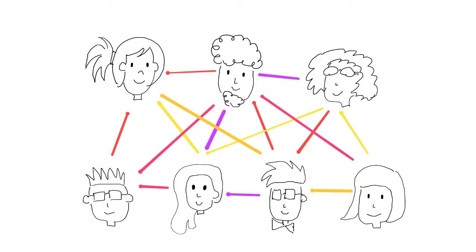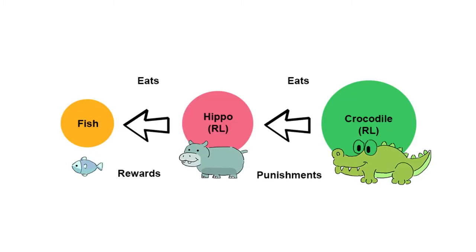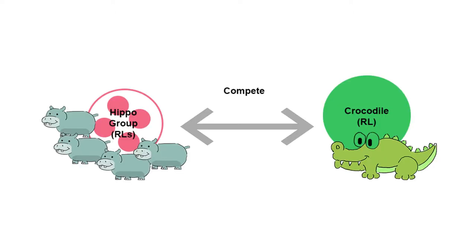In games, the agents are bonded with different relationships. Looking at the predator and prey relation in the animal world, we assume the food chain between crocodile, hippo, and fish. Starting with a simple eating relationship, we then add the rule that a crocodile is unable to fight against two hippos. We would like to see whether the hippo will try to save itself or save the other hippos.